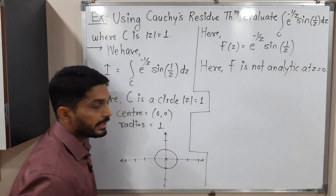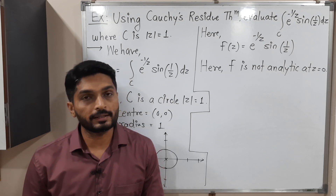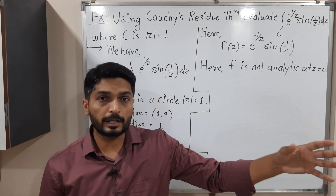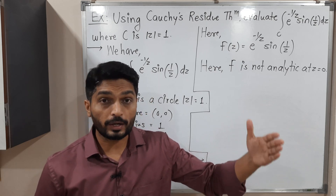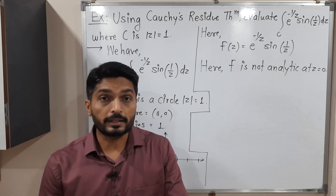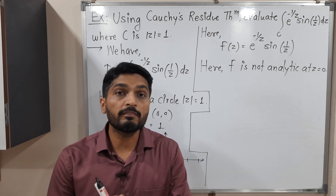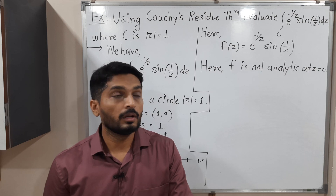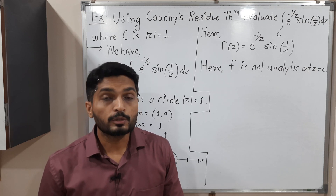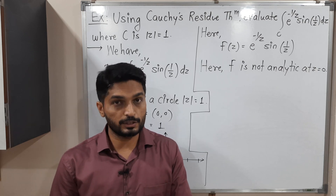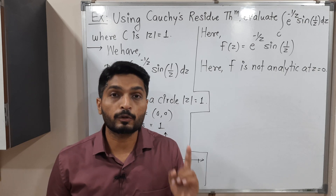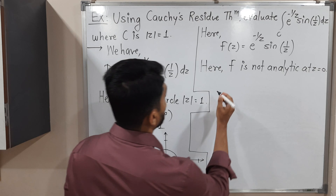Since z = 0 lies inside the circle, we must find the residue there. The residue can be found by expressing the function as a Laurent series — the coefficient of 1/z gives the residue. We could use other residue formulas, but those are only applicable when the singularity is a pole. Here we cannot say directly whether it is a pole, so we must follow the definition and find the Laurent series expansion.